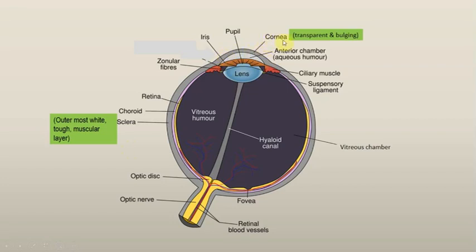The cornea is a part of the sclera which bulges out in the anterior portion of the eye, and it is transparent — it has no color. What is its function? It allows light to enter the eye — it plays a door role, meaning light comes into the eye through the cornea.